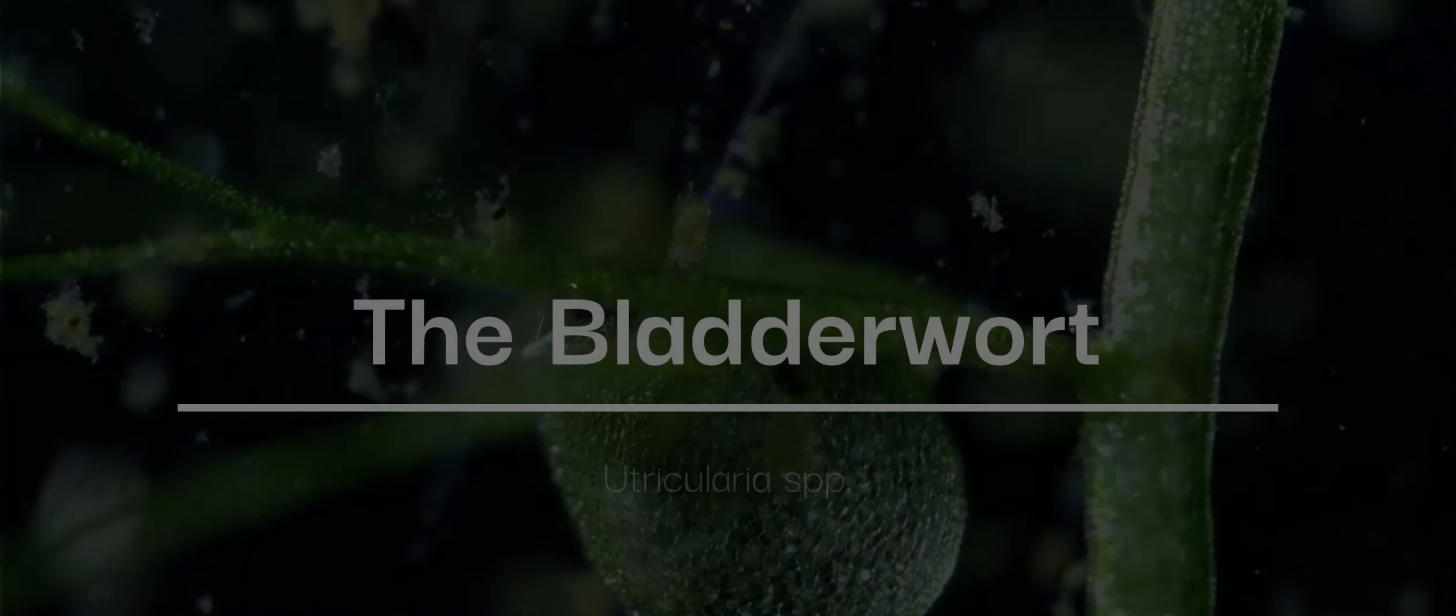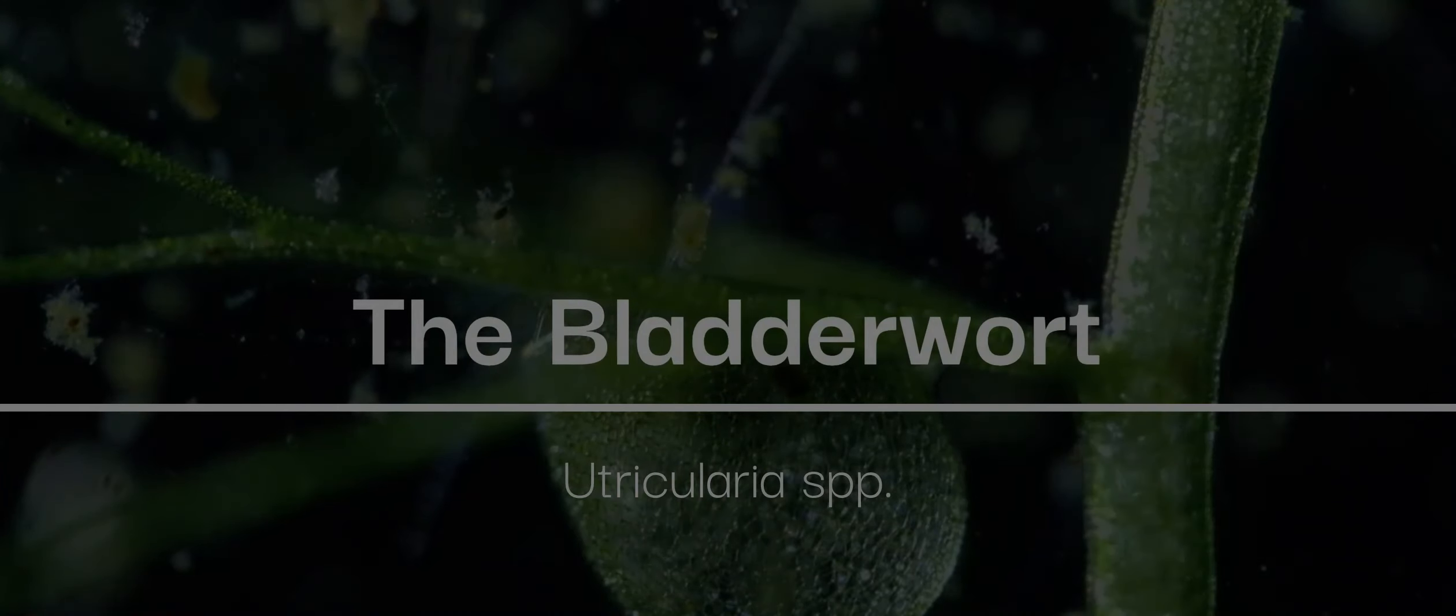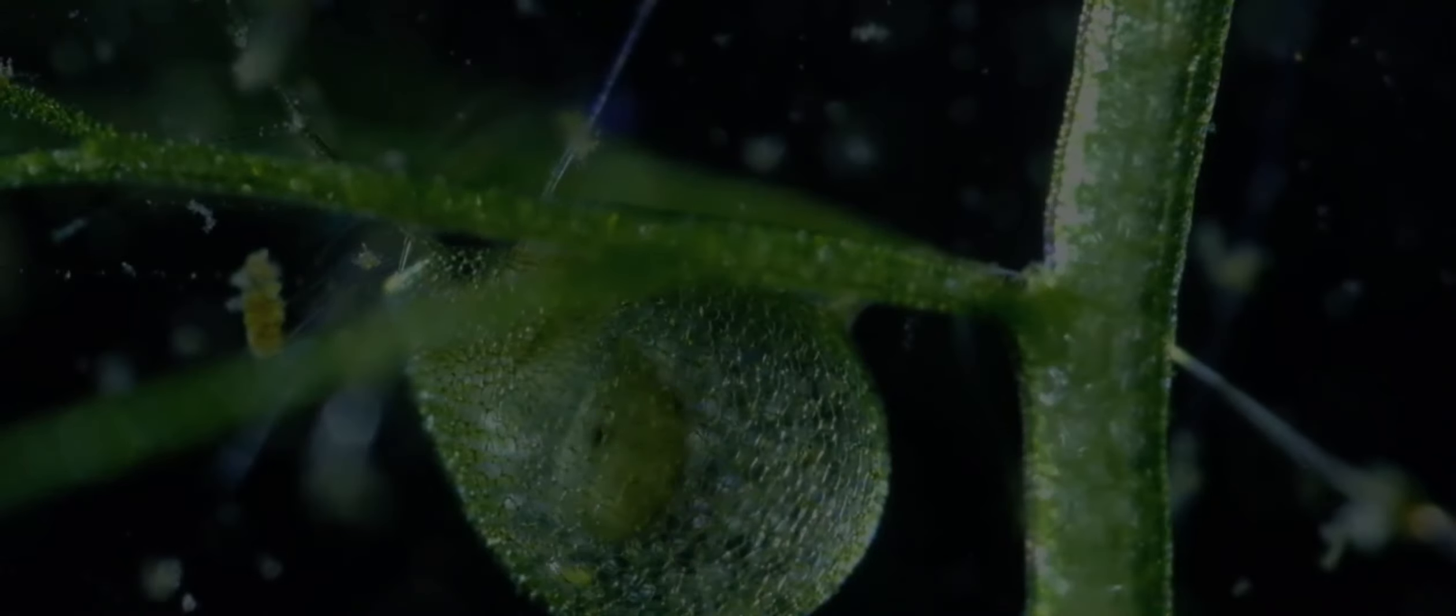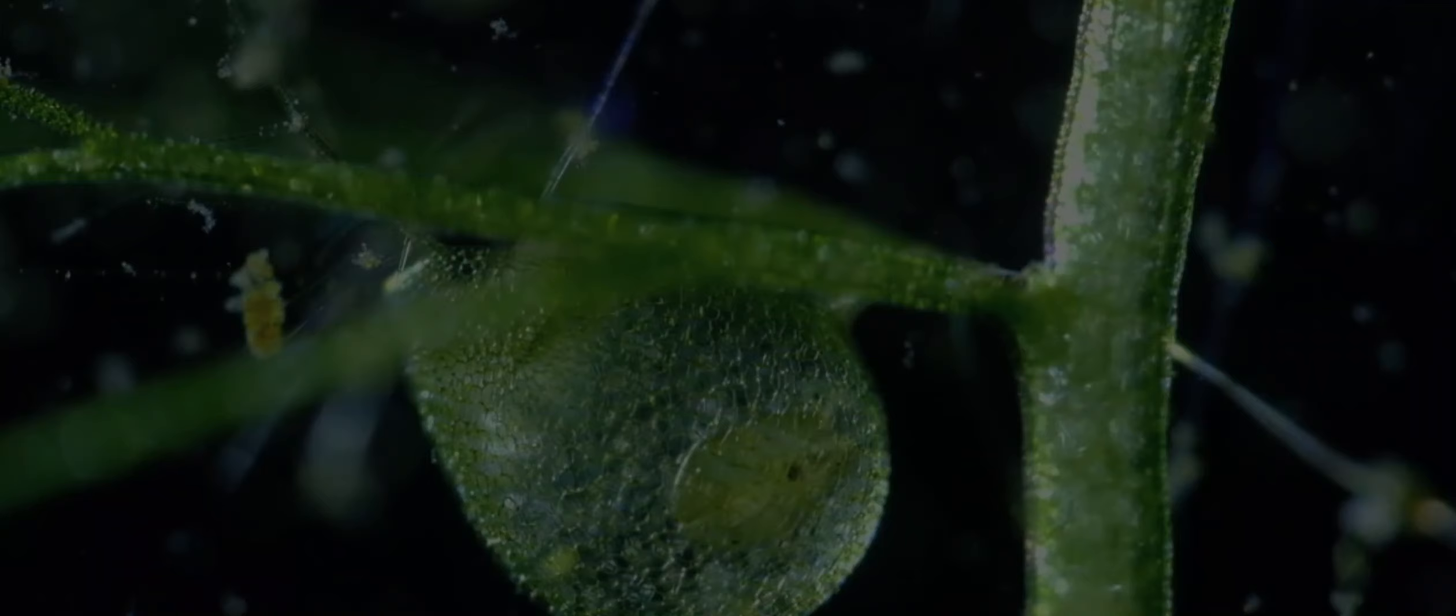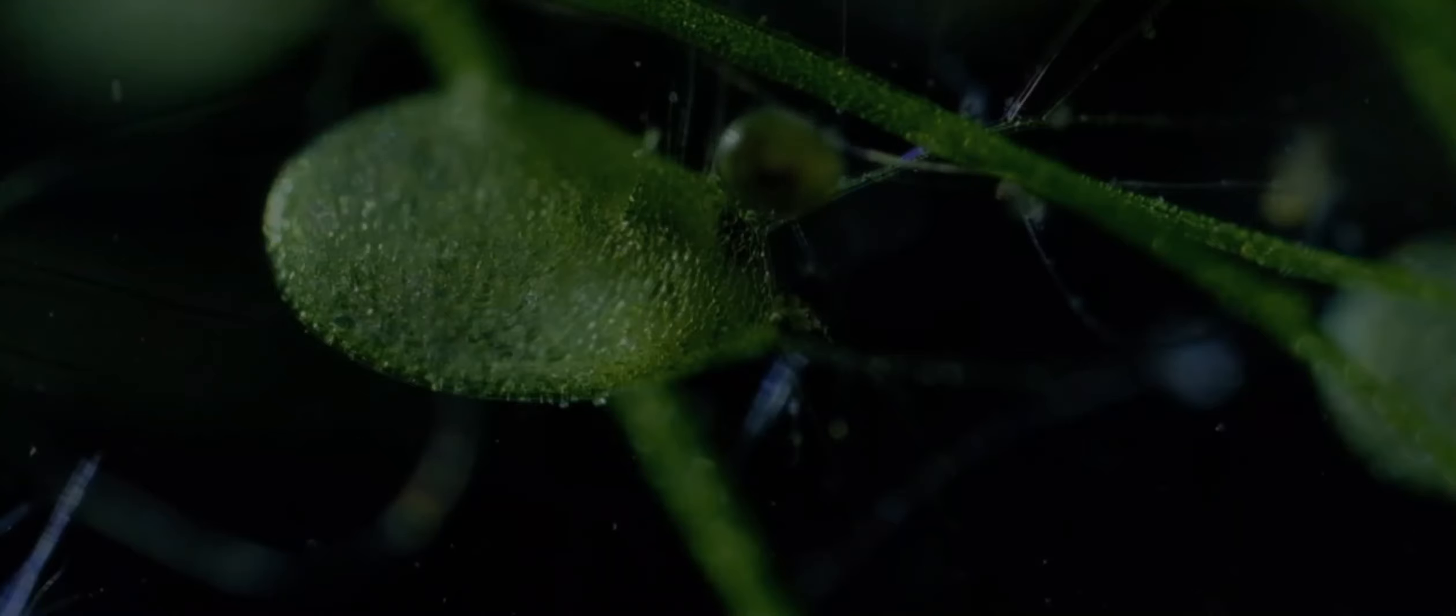6. The Bladderwort, Utricularia SPP. This aquatic plant uses tiny underwater bladders to trap prey. Trigger hairs on the bladder detect passing insects, sucking them in with lightning speed. This aquatic plant uses tiny bladders that suck in prey like microscopic vacuum cleaners.